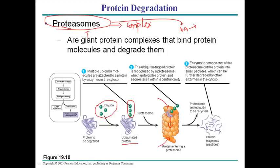The different residues and moieties on the inner surface of the proteasome interact with the outer layer of the protein, breaking it into smaller fragments. These fragments of protein are then released from the proteasome.